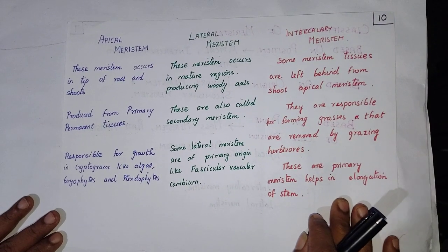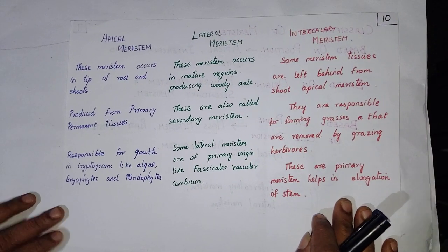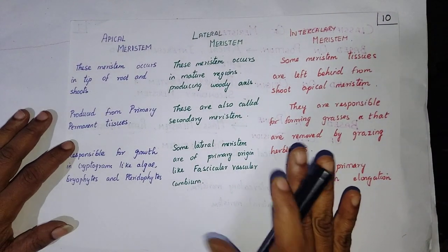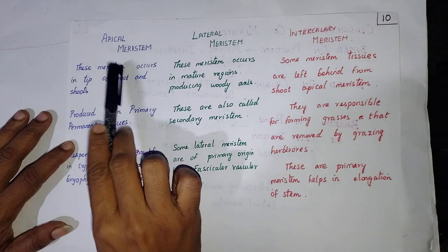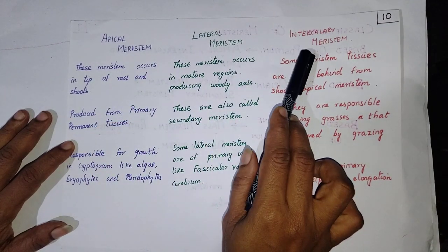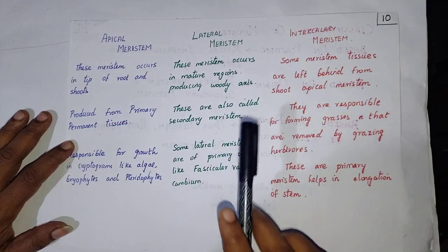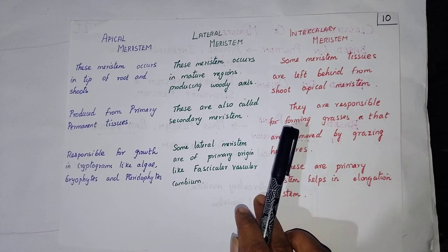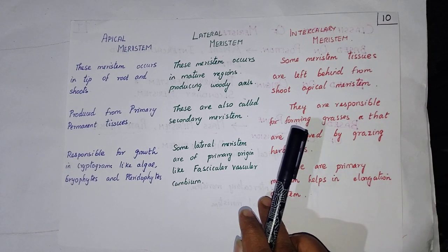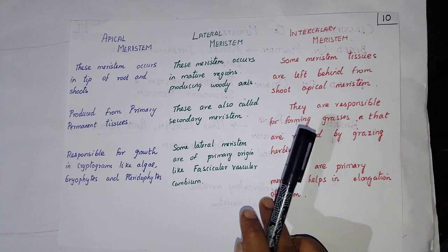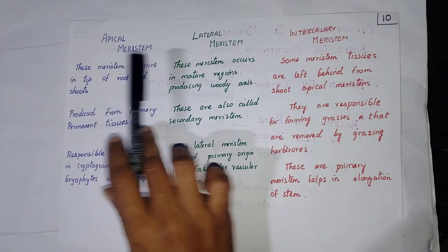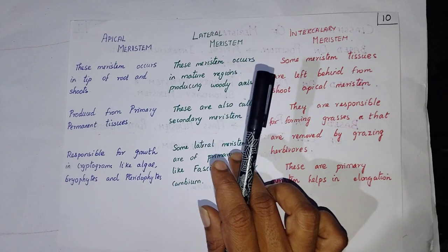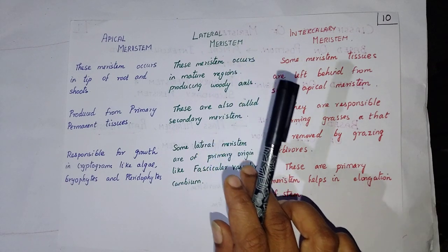Good day children. Now we will be looking at the differences between the apical meristem, lateral meristem, and the intercalary meristem. I hope you all remember the diagram in which we have spoken about the location of the apical meristems, lateral meristem, and the intercalary meristems.